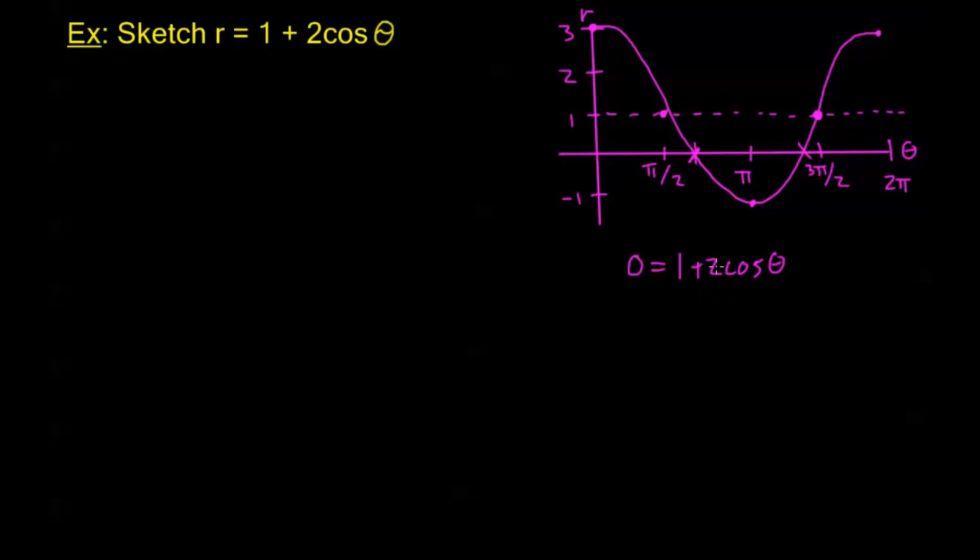Now remember we learned how to do this in chapter 7. This should be no problem to us. We go ahead and subtract 1 from both sides and divide by 2. We're going to get cos(θ) = -1/2.